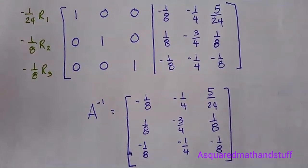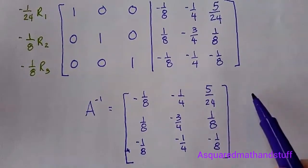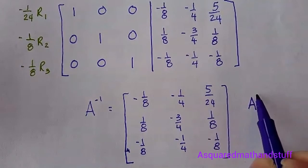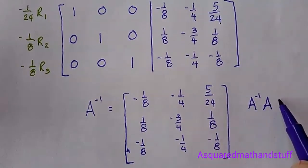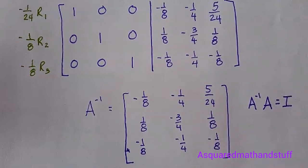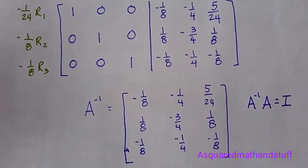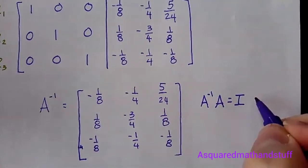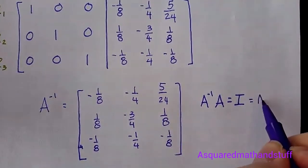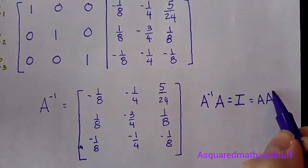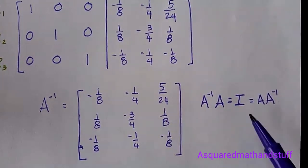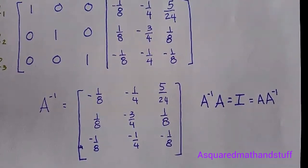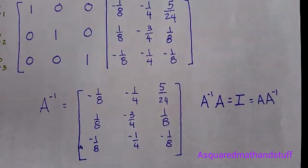If you wanted to double check, go for it. You can multiply this matrix by your original matrix A. You should get the identity matrix for a 3 by 3, which is that all 1s and 0s with the diagonal of 1s. And if you multiply your given matrix by the inverse, you should also get that identity matrix. Thanks for solving a 3 by 3 matrix with me. If you like what you saw, hit the subscribe button down below and I will be chatting with you later.